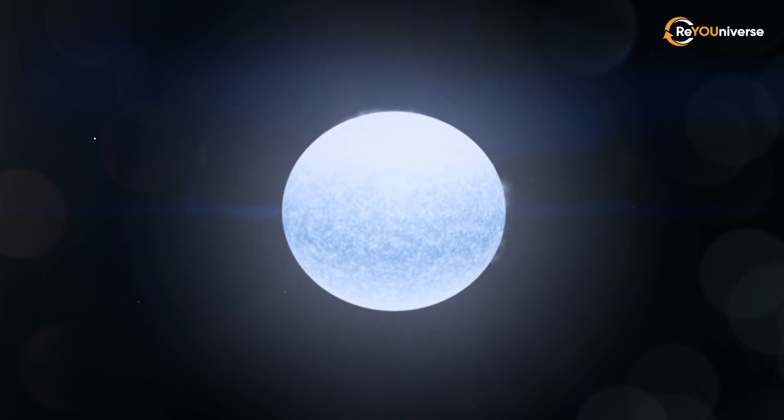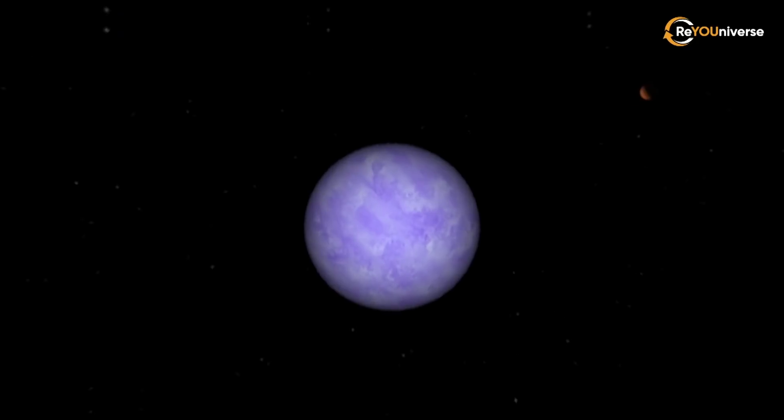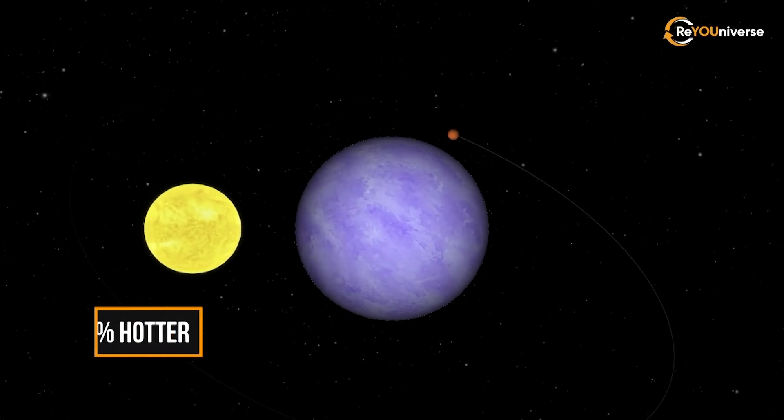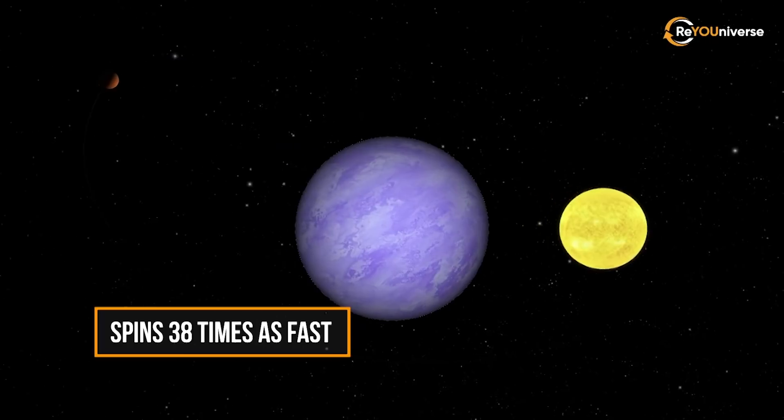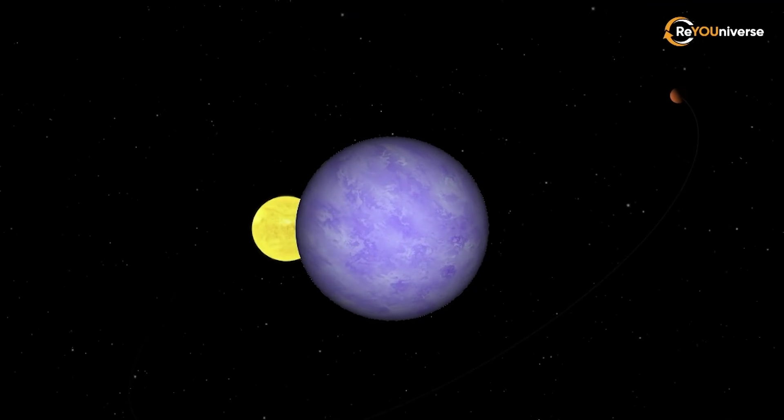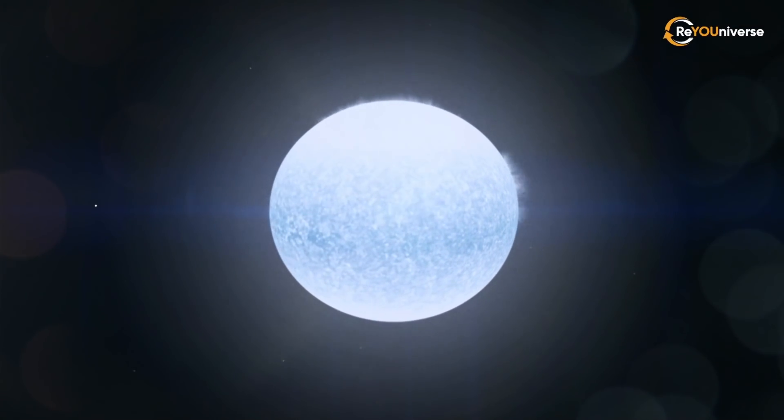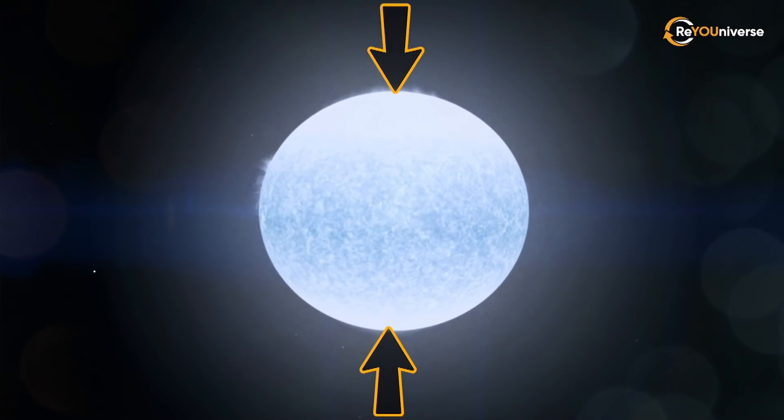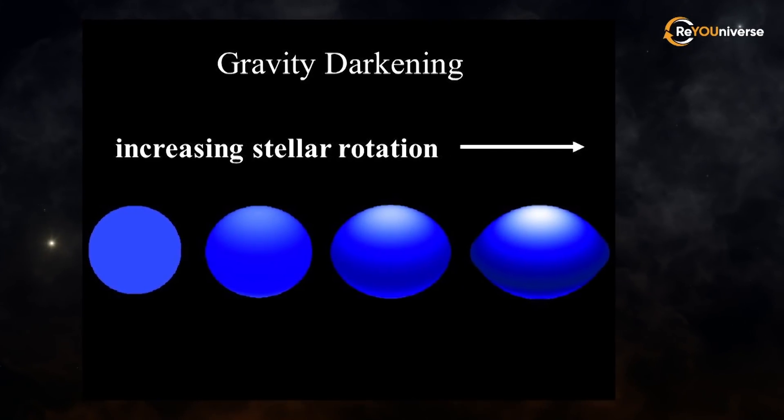As if this wasn't enough, its host star is an oddity too. The primary, KELT-9b is roughly twice the size of the sun, 56% hotter, and spins 38 times as fast. That makes for a complete stellar rotation in 16 hours. As you would imagine, the rapid spin causes the star to deform, flattening at the poles and broadening at the equator. As a result, we run into the phenomenon known as gravity darkening.